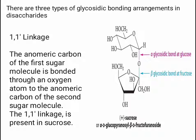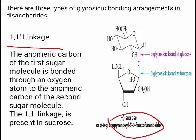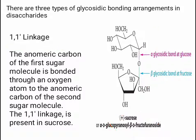There are three types of glycosidic bonding arrangements in disaccharides. The first is the 1,1-linkage: the anomeric carbon of the first sugar molecule is bonded through an oxygen atom to the anomeric carbon of the second sugar molecule. The 1,1-linkage is present in sucrose. The anomeric carbon of the first molecule is carbon-1 and of the second is carbon-1'. The bonding is between C1 and C1'.